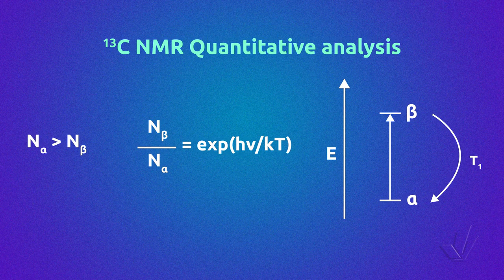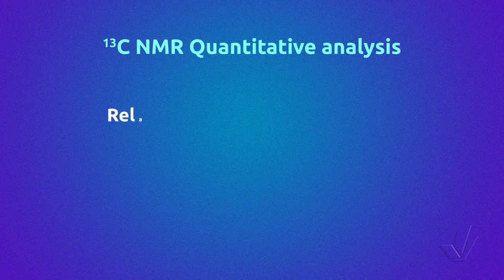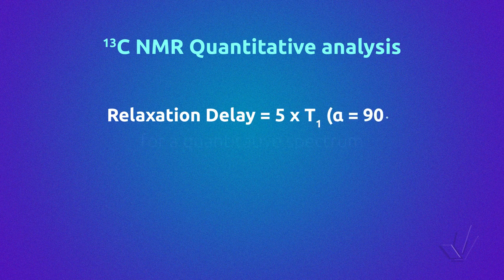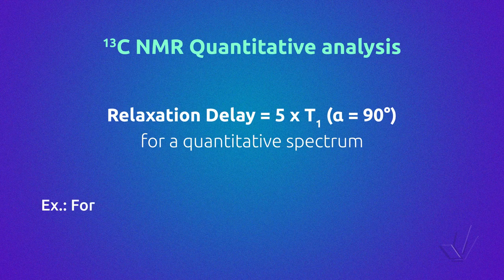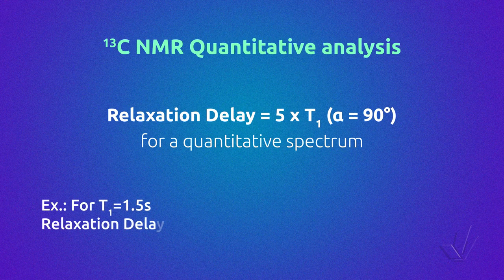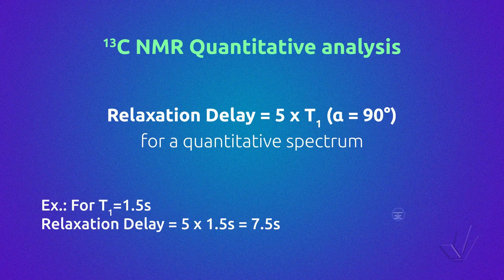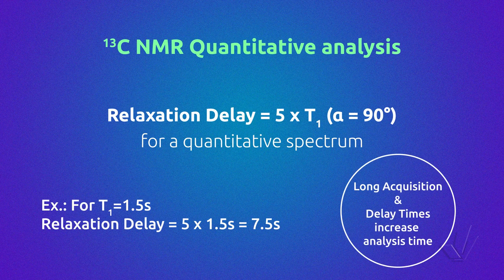It has been established that for a quantitative carbon spectrum, a relaxation delay of five times the relaxation time of the carbon atoms must be applied, for a pulse angle of 90 degrees. So if a carbon atom has a relaxation time of 1.5 seconds, the relaxation delay should be 7.5 seconds. The problem is that long acquisition times and relaxation delays enormously increase the time of an NMR analysis.